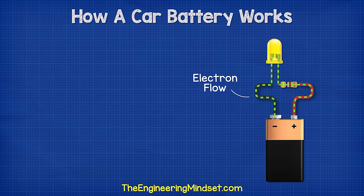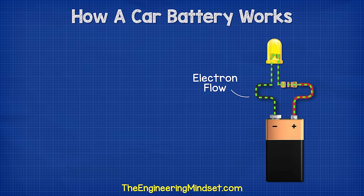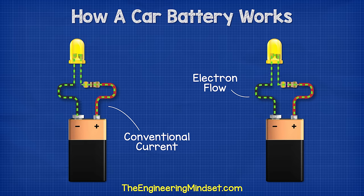The electrons flow from the negative to the positive. This is known as electron flow — it's a theory of how electricity works and it's what's actually occurring.